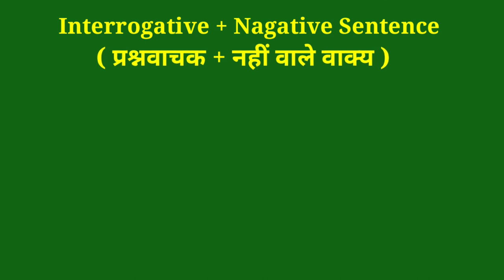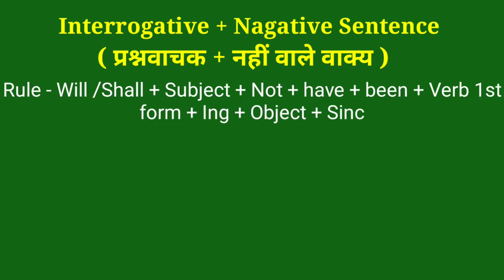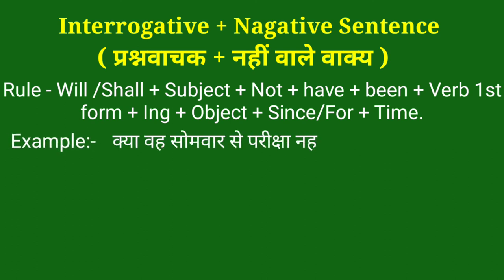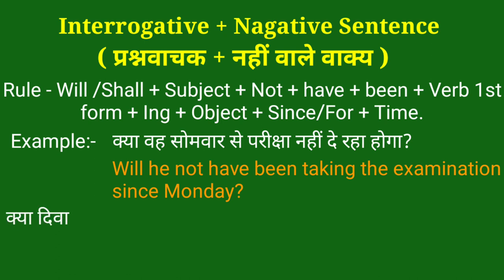In last — interrogative plus negative sentence — प्रश्नवाचक + नहीं वाले वाक्य। For making this, we use: Will/Shall + subject + not + have + been + verb first form + ing + object + since/for + time. For example: क्या वह सोमवार से परीक्षा नहीं दे रहा होगा? — Will he not have been taking the examination since Monday? इसमें 'will have been' helping verb है, 'he' हमारा subject है, 'not' नहीं के लिए प्रयोग किया गया है, 'taking' verb की first form + ing है, बाकी object है, 'since' का प्रयोग किया गया है और time Monday है।